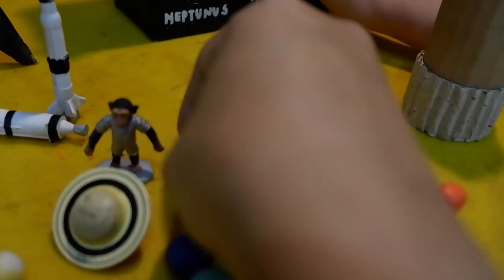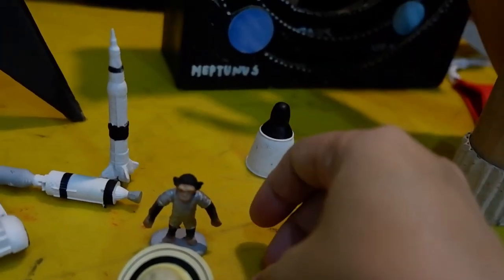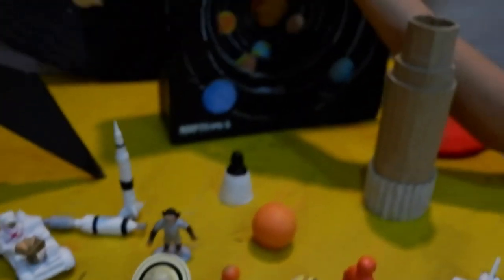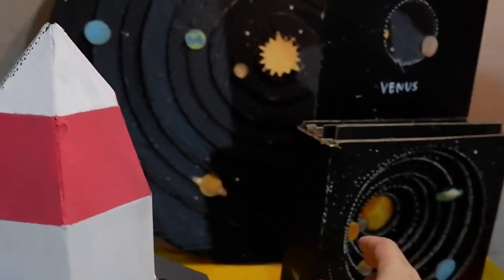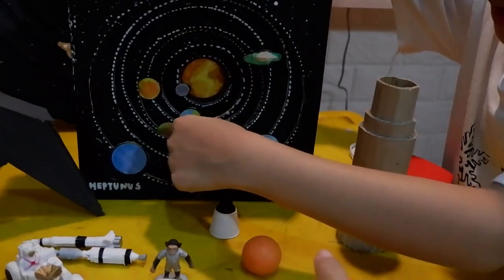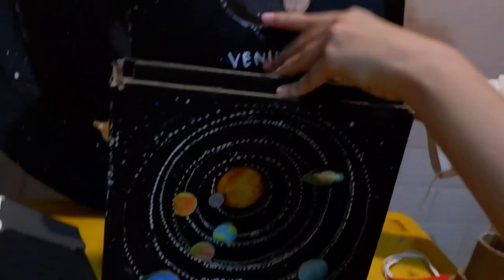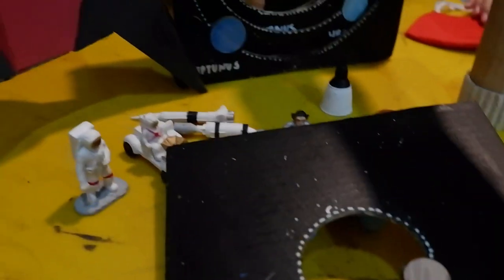Yang paling kecil itu ini nih, apa ya yang paling kecil? Nah jadi untuk memudahkan teman-teman belajar, ini mainan kardus. Ini puzzle layer, jadi teman-teman bisa sambil belajar, bisa sambil main puzzle.